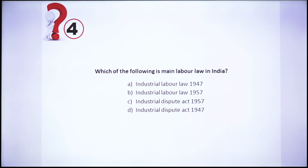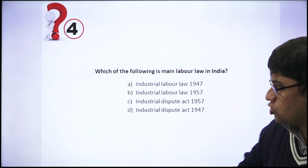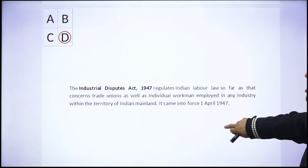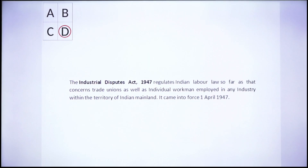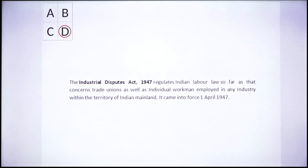Next question: which of the following is the main labor law in India? The answer is the Industrial Dispute Act 1947, enacted on the first of April 1947. It regulates industrial labor laws as far as they concern trade unions as well as individual workmen employed in industries.